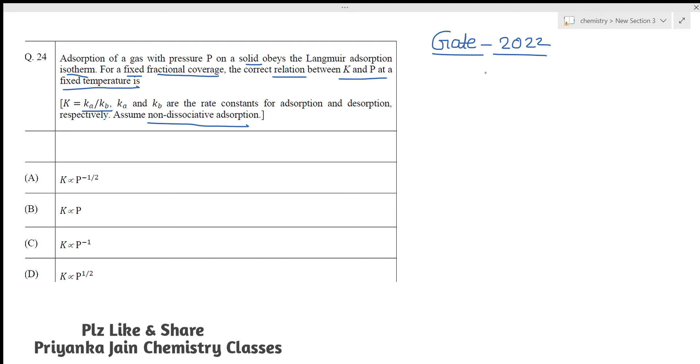So see here, whenever you are seeing the simple Langmuir adsorption isotherm, it means without dissociation or association. Then what is the formula for this? Theta is equal to Kp upon 1 plus Kp. You do not need to do the whole derivation. Just understand this formula. Learn this formula. Theta is equal to Kp upon 1 plus Kp.